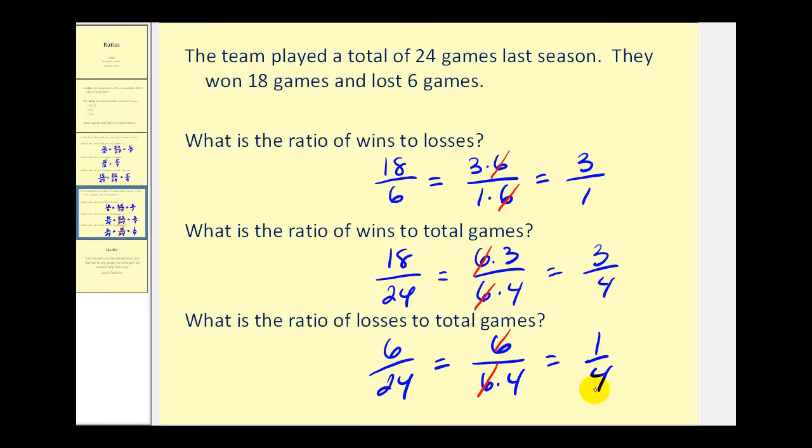And hopefully that should make sense, because if the ratio of wins to total games was 3 to 4, then the ratio of losses to total games should be 1 to 4, accounting for all of the games played.